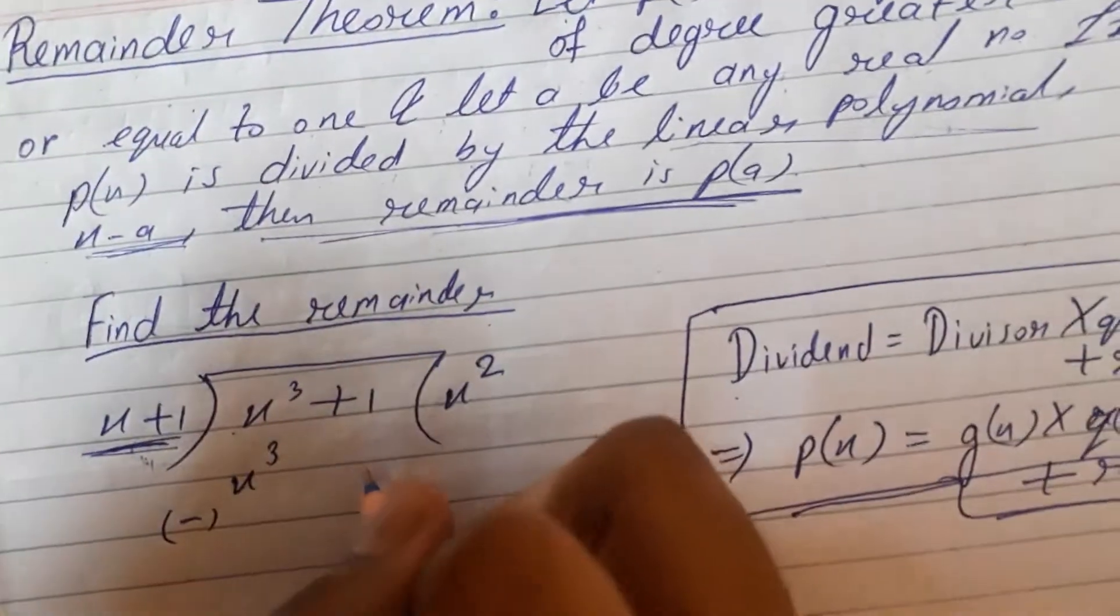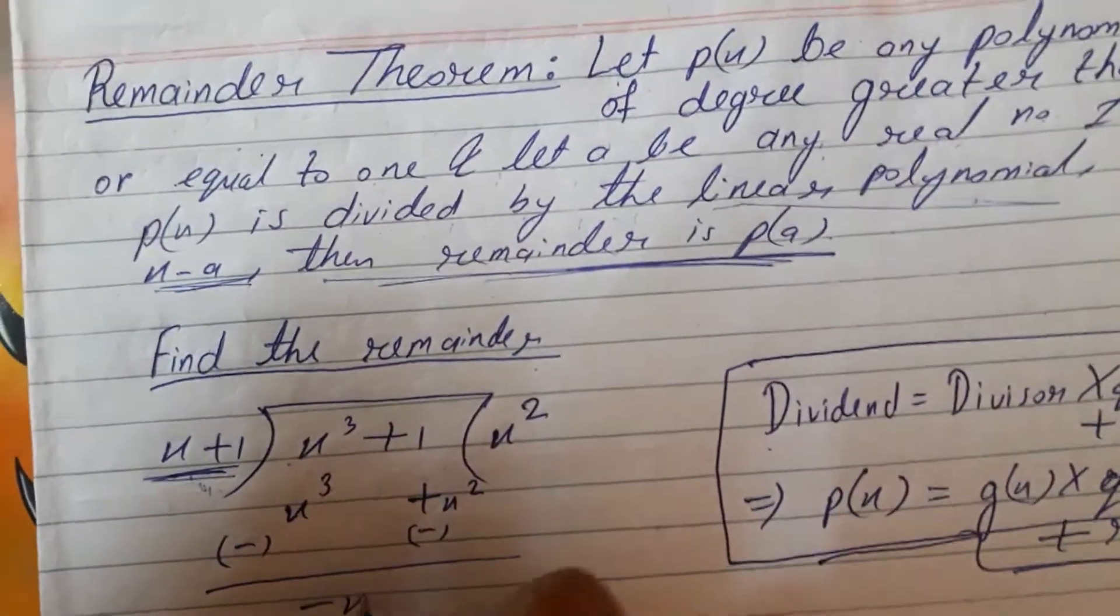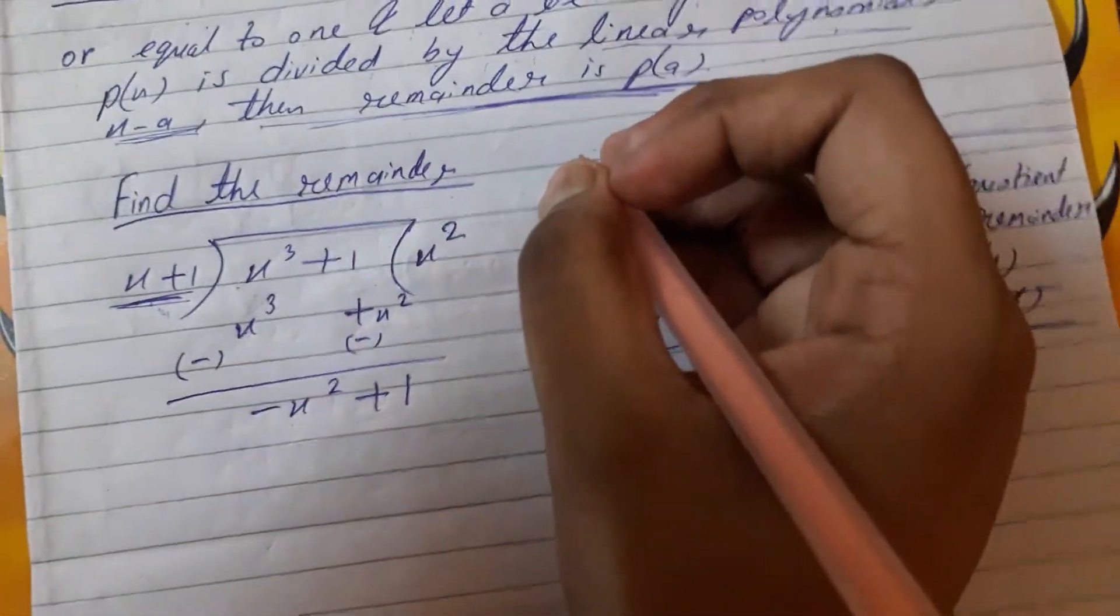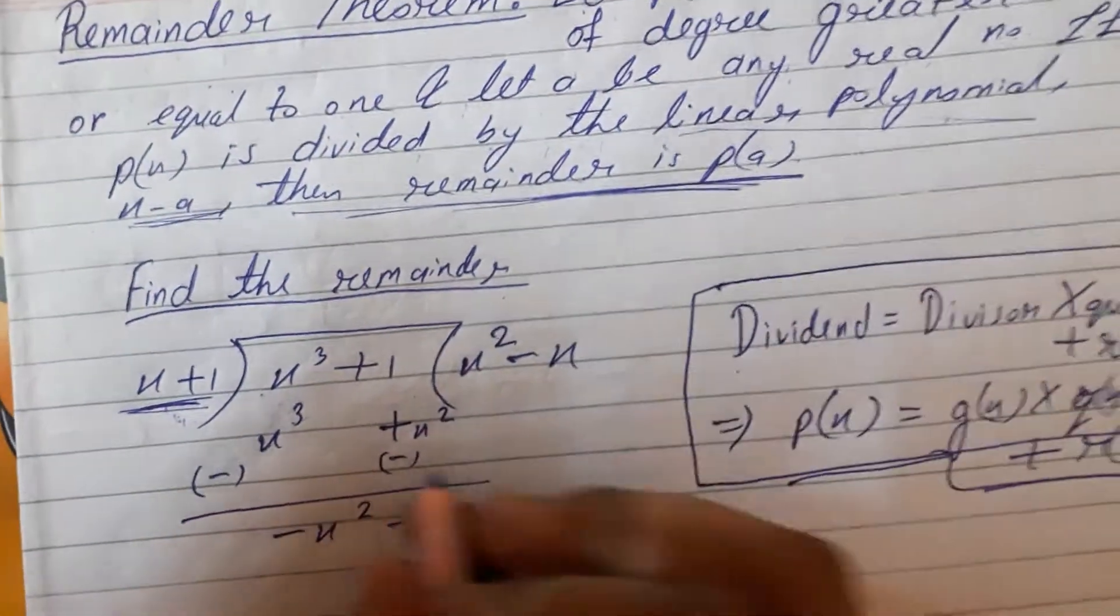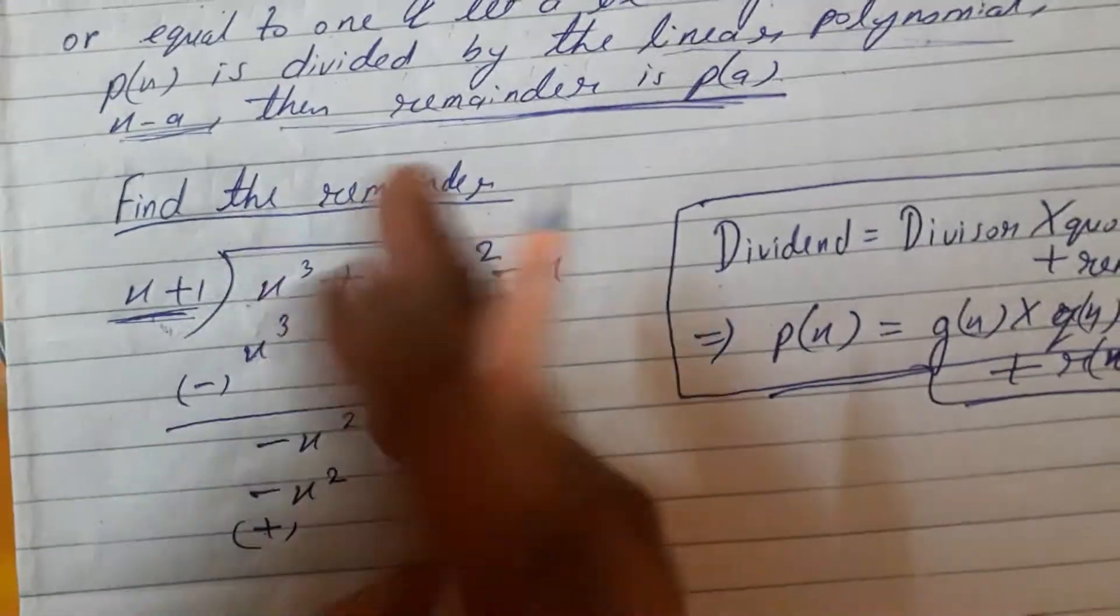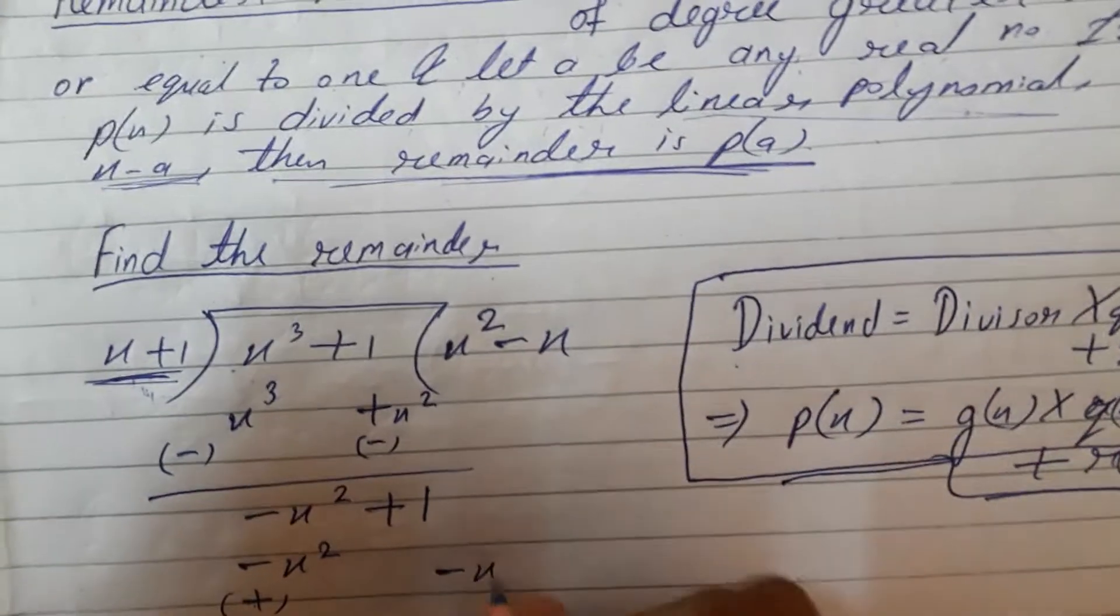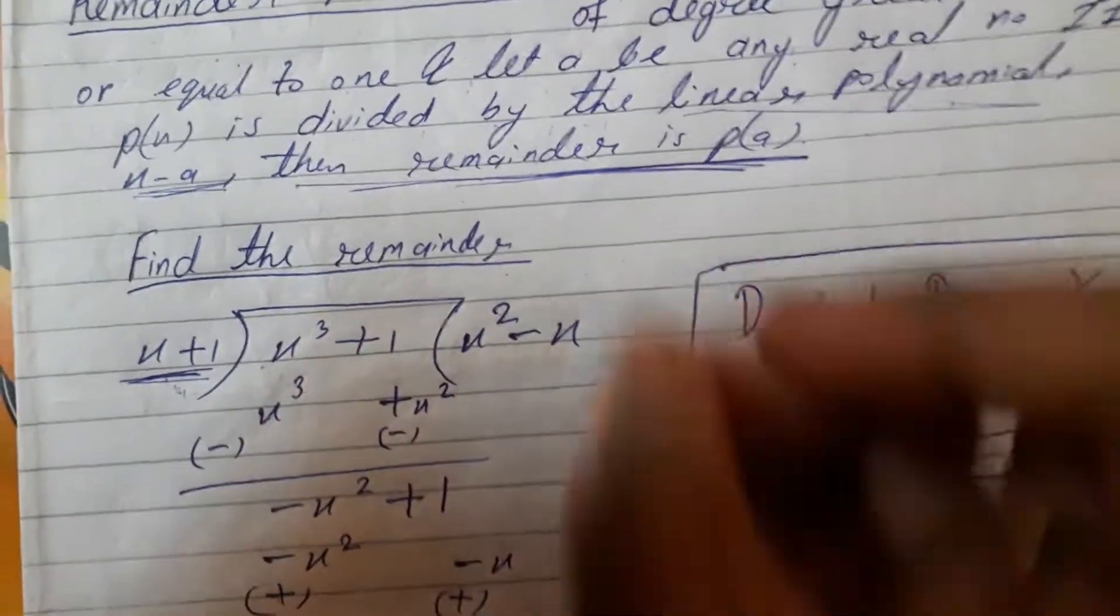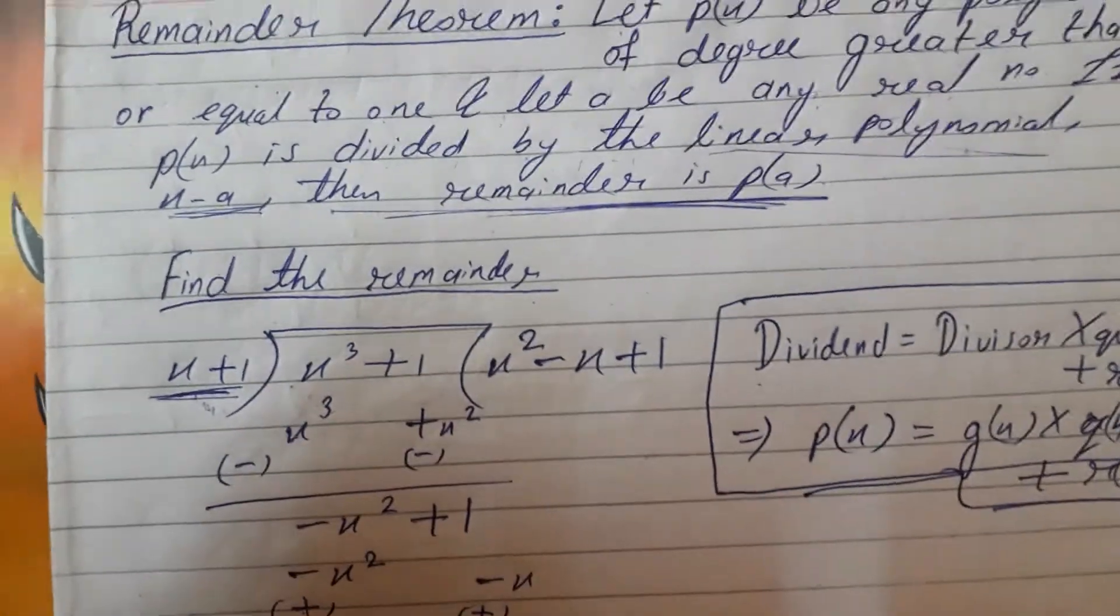Here we have minus x squared plus minus x. Minus minus gives plus x, plus 1. x plus 1 minus minus cancel out, and the remainder would be 0.